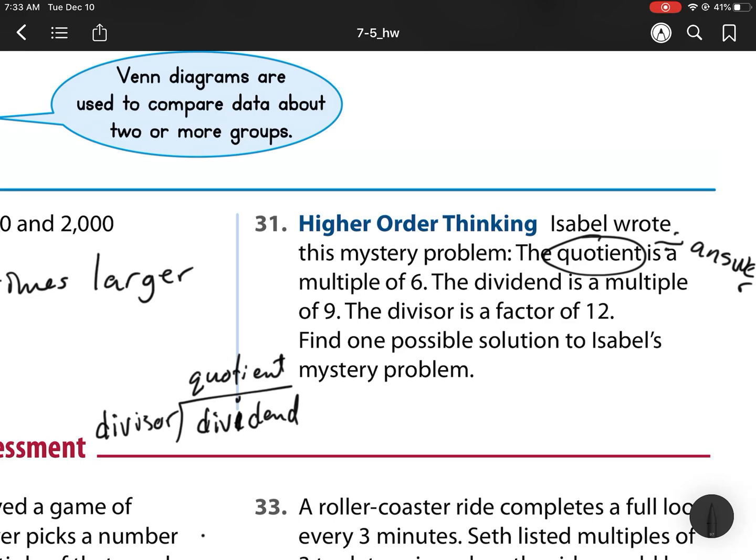The dividend is a multiple of 9. So, here we have a multiple of 6. Dividend is a multiple of 9. The divisor is a factor of 12. If I have one possible solution to Isabelle's mystery problem. Well, what I have here is I have multiples of 6. So, the quotient is a multiple of 6. So, that's 6, 12, 18, 24. Those are my multiples of 6.